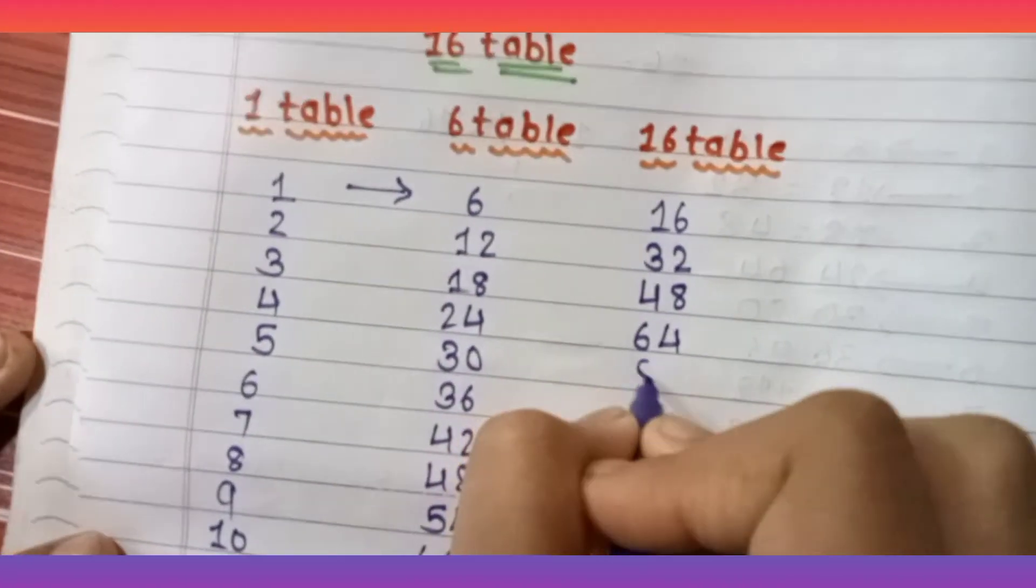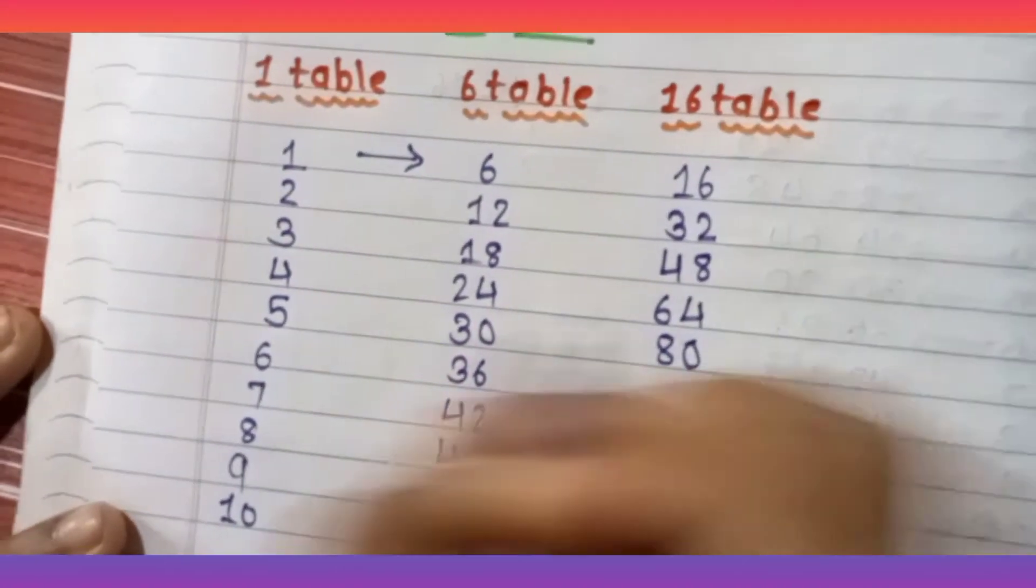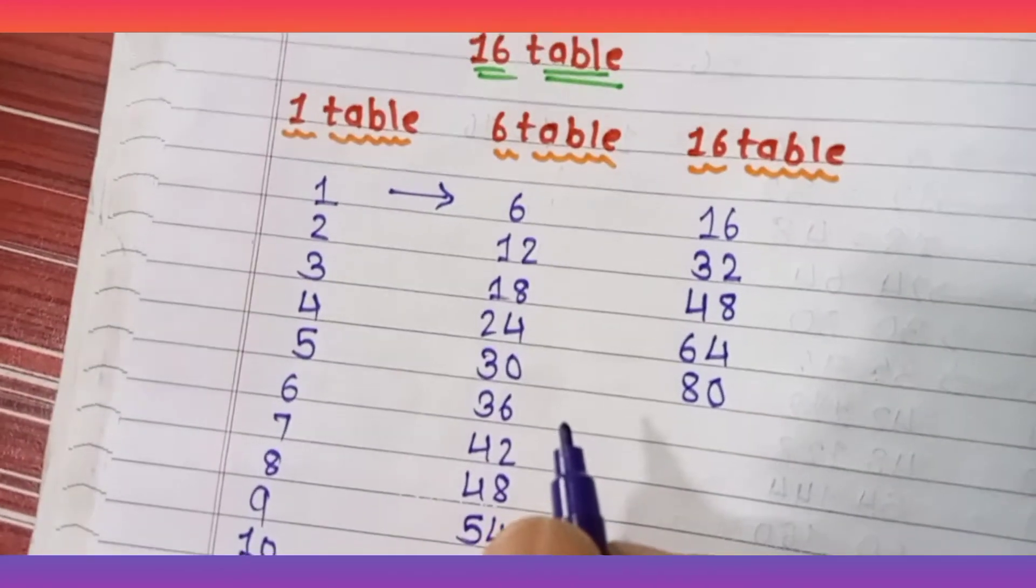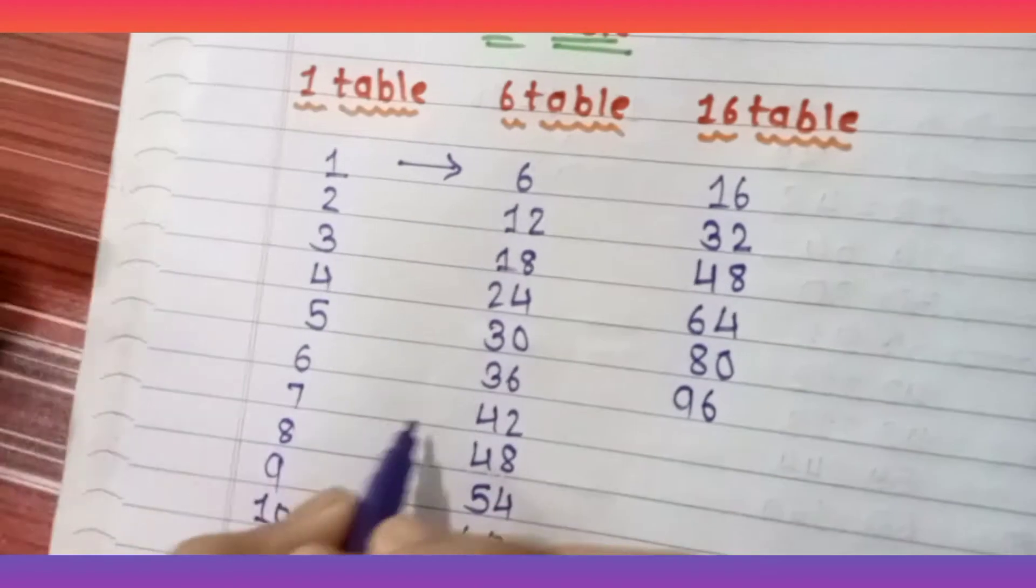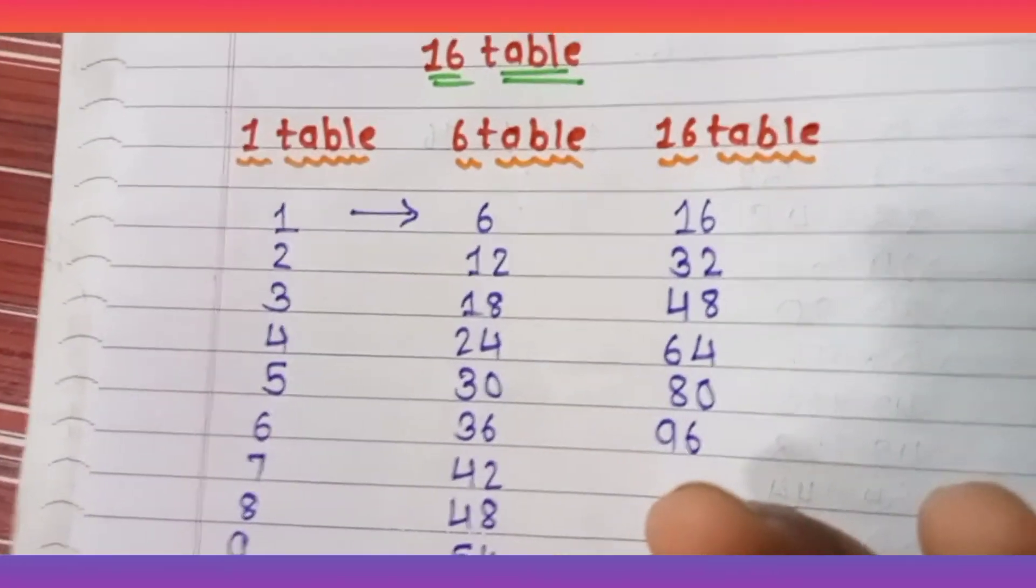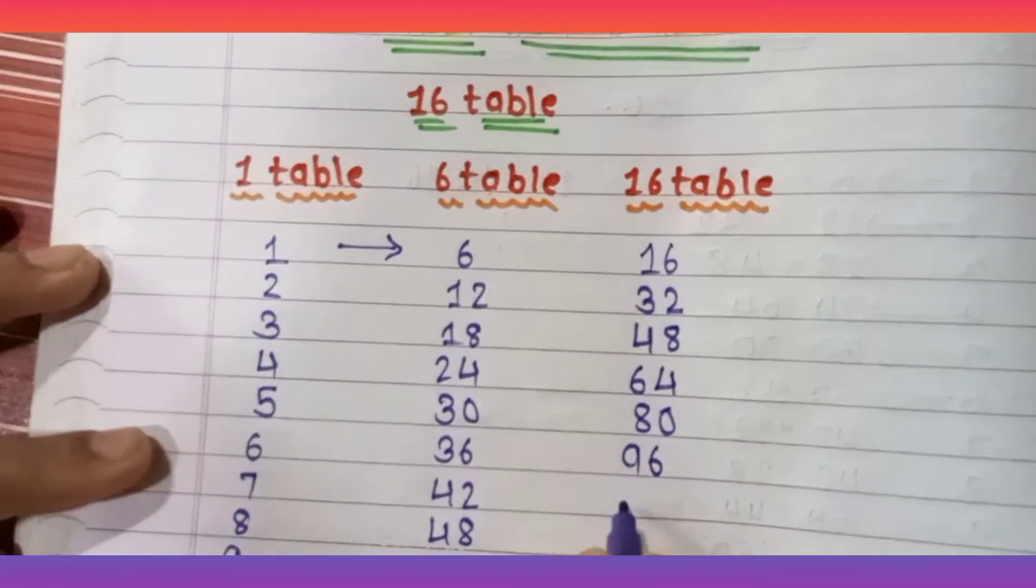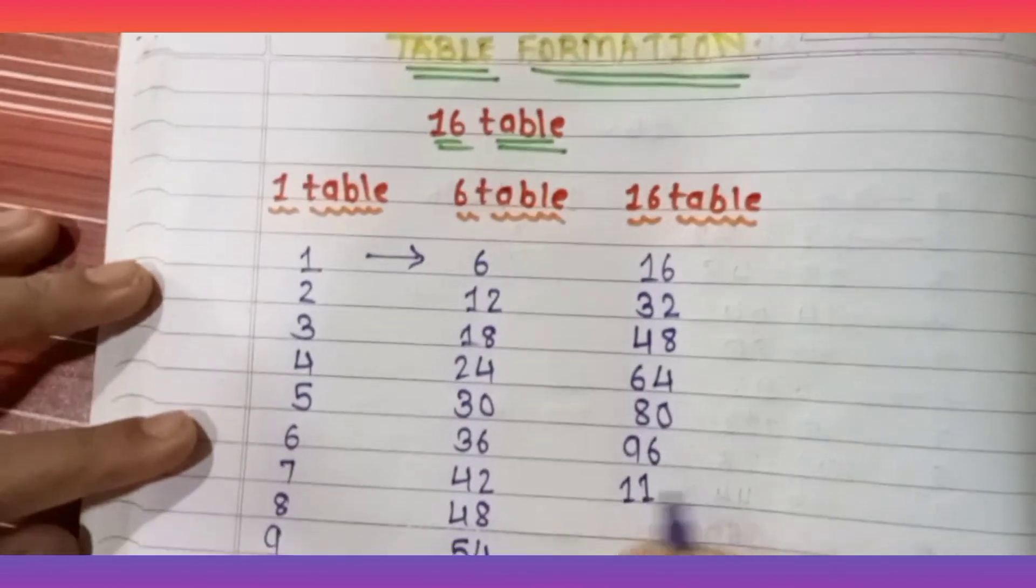5 plus 3 is 8, and you will write 0 as it is. 6 plus 3 is 9, and write the 6 as it is.